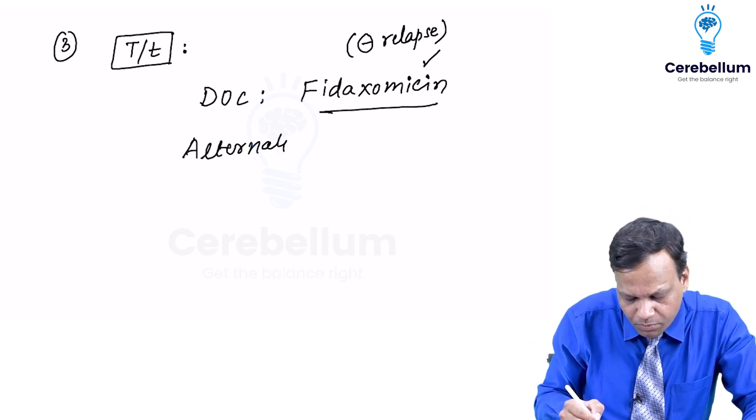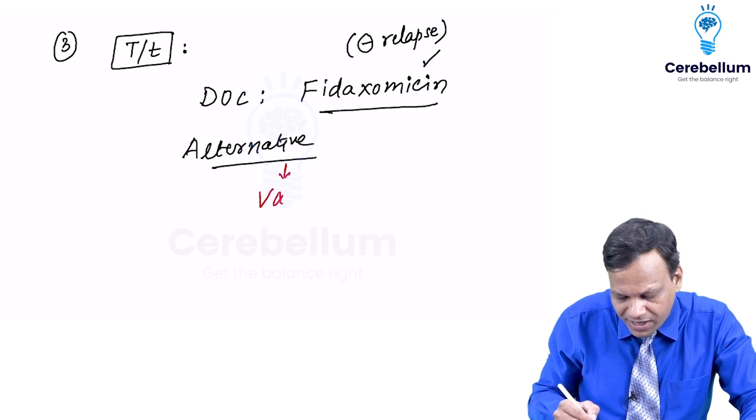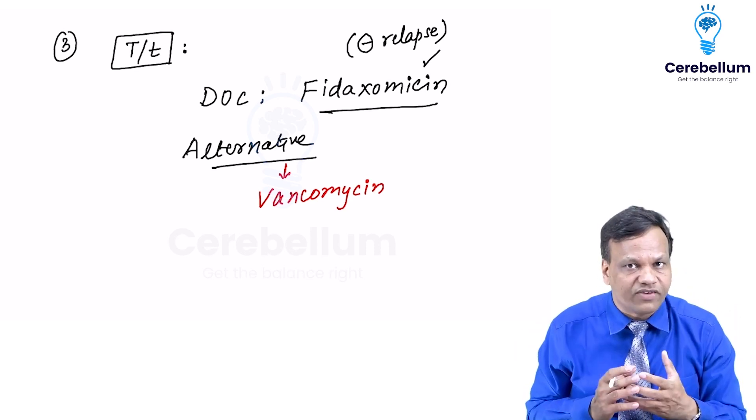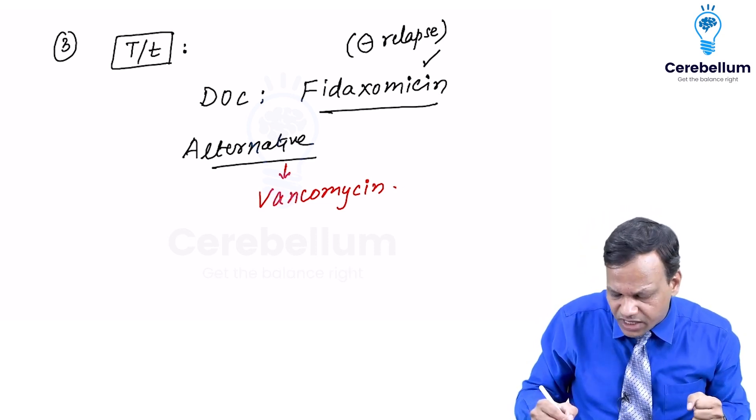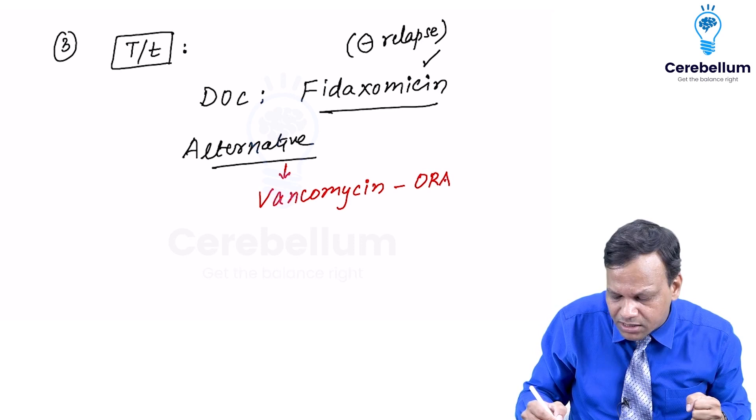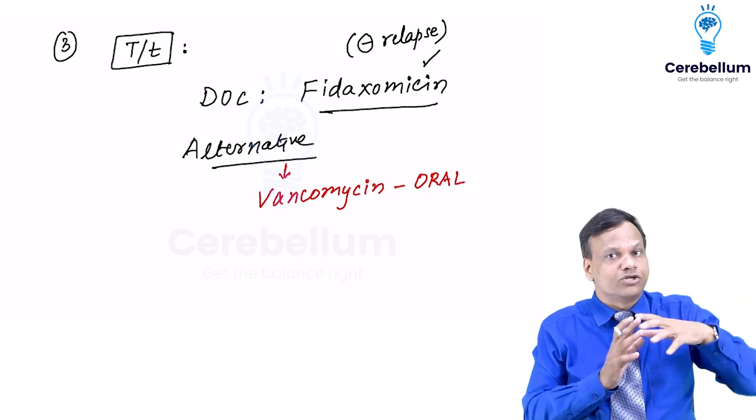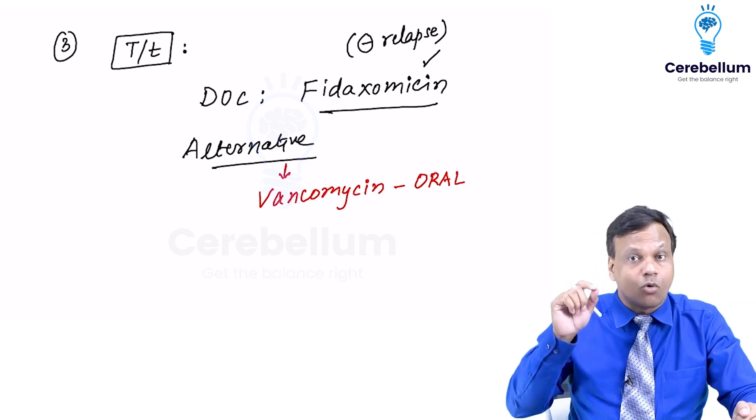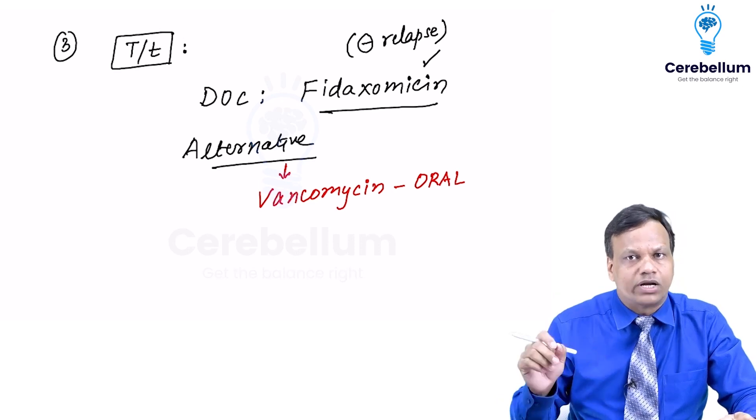Apart from fidaxomicin we can use vancomycin. Vancomycin can be used but special thing to remember normally vancomycin is not effective orally. We know vancomycin is not effective orally because it cannot be absorbed. So in this case we are giving oral vancomycin because we do not want it to get absorbed. When we give orally it is not absorbed so it goes to colon kill the bacteria there. So vancomycin is given orally for pseudomembranous colitis. Only indication where it is given orally.